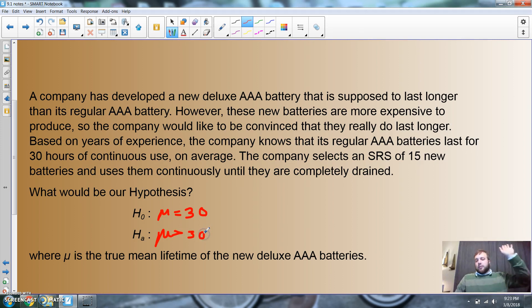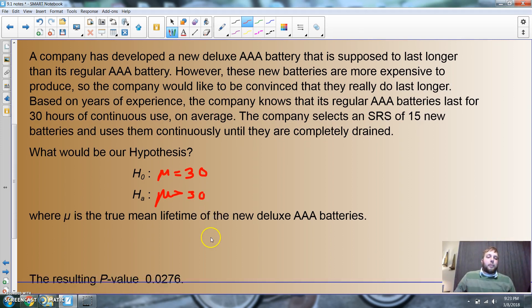I don't want to know if it's less than 30 because that's worthless to me. I want to make sure these batteries are more than 30, because if they are then I will produce them. It'll be more money out of my pocket, but I'll produce them because they'll last longer. So μ is the mean lifetime of the new batteries.